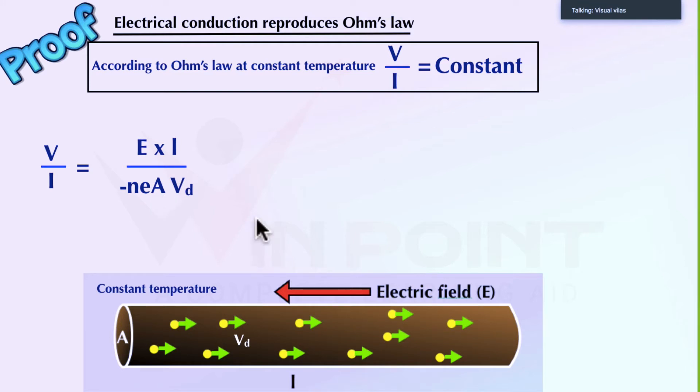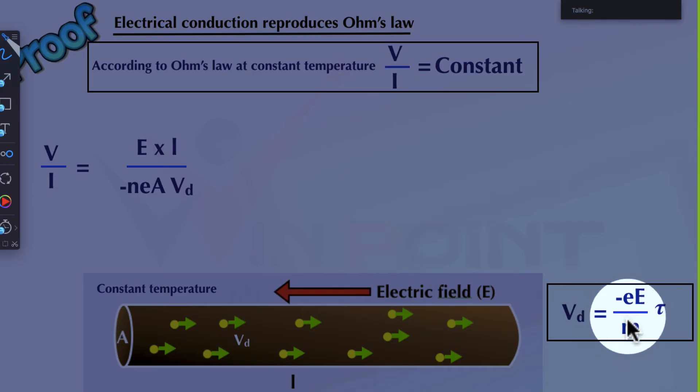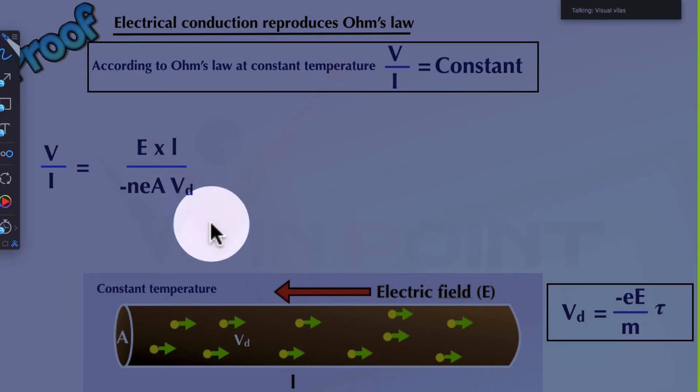What is the equation for VD? Minus E E by M into τ. Here there is a minus. There is a minus here. Minus E E by M into τ. Here also there is a minus. Both minus is indicating the direction. So when we are substituting the value of VD in this equation, the minus E minus E, it will cancel.